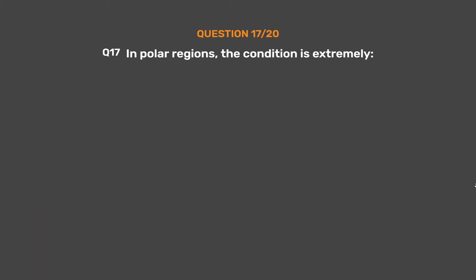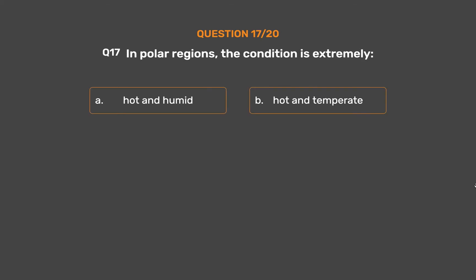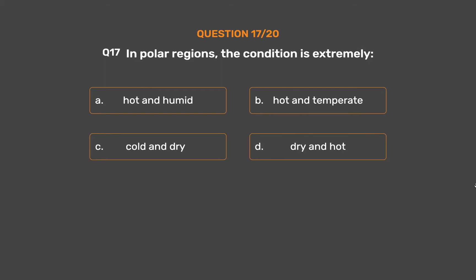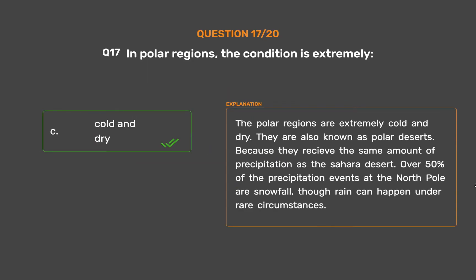Question 17. In polar regions, the condition is extremely: Option A: Hot and humid. Option B: Hot and temperate. Option C: Cold and dry. Option D: Dry and hot. The correct answer is Option C: cold and dry. The polar regions are extremely cold and dry, also known as polar deserts, because they receive the same amount of precipitation as the Sahara desert. Over 50% of the precipitation events at the North Pole are snowfall, though rain can happen under rare circumstances.